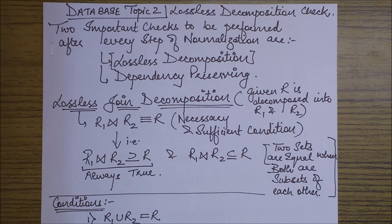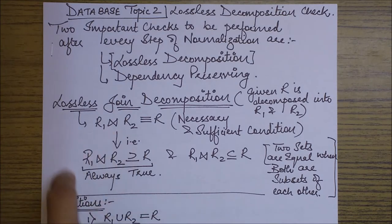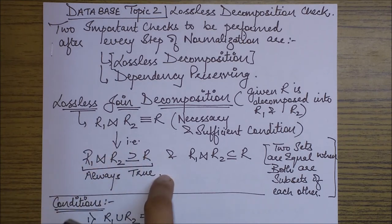Now how do I say this is always true? This is because even if the decomposition was not lossless, it would result in some wrong values, I would say in some extra tuples. So in case this thing is extra, it will always be a superset of R.